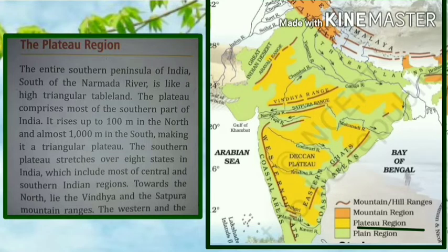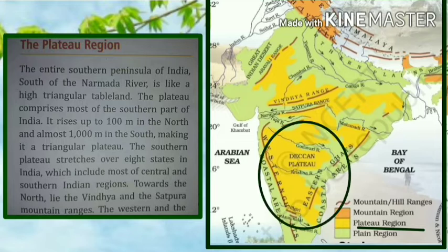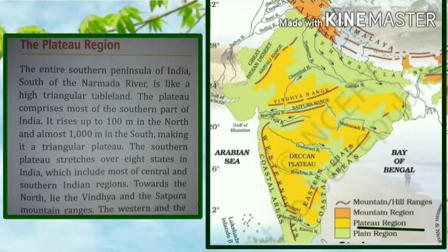The entire southern peninsula of India, south of the Narmada River, is like a high triangular tableland. The plateau comprises most of the southern part of India. It rises up to 100 meters in the north and almost 1000 meters in the south, making it a triangular plateau.